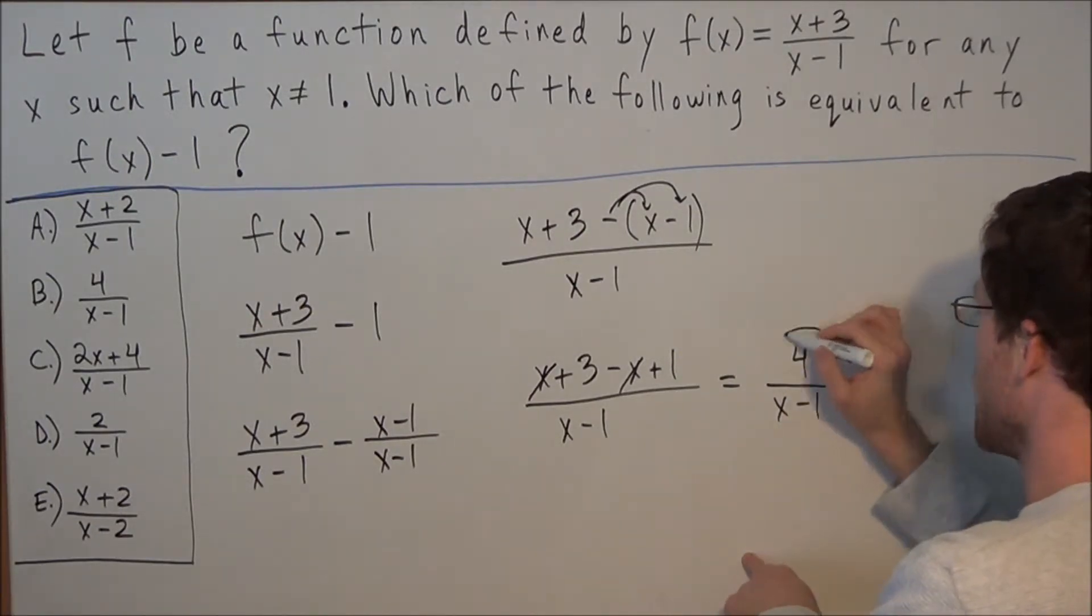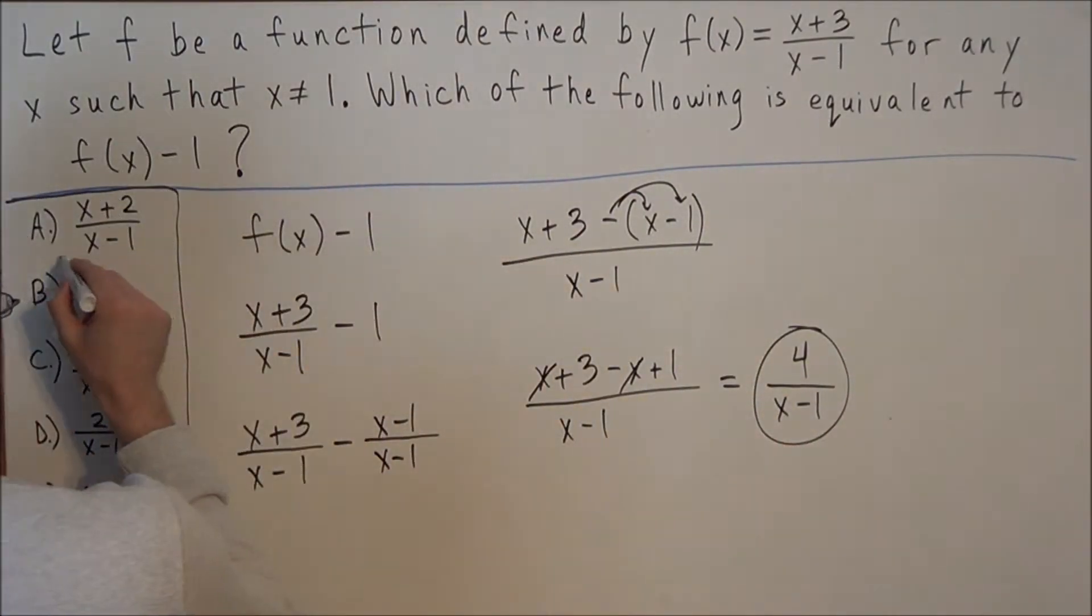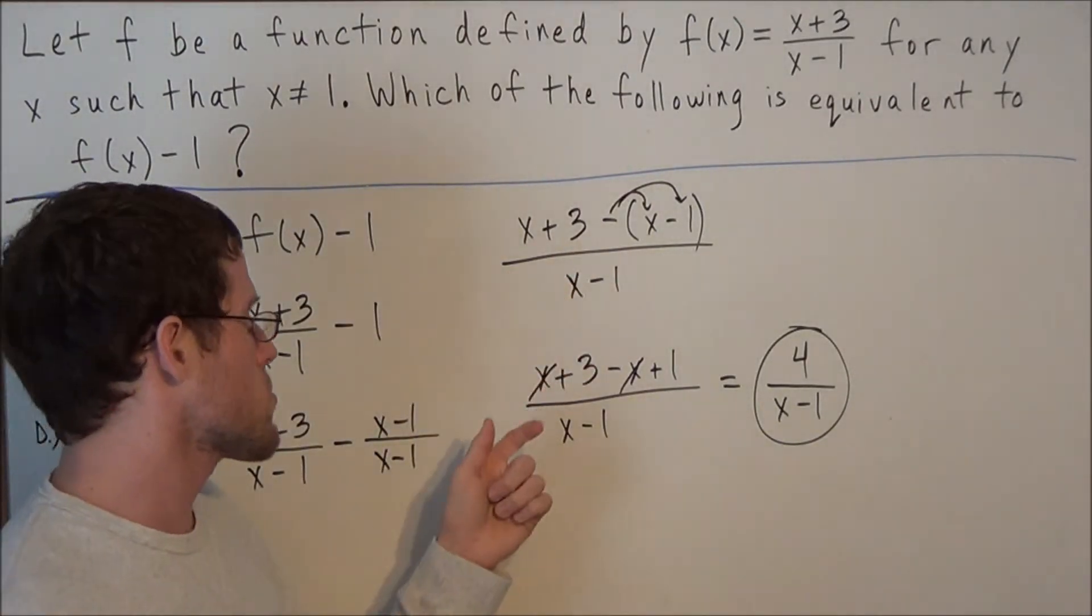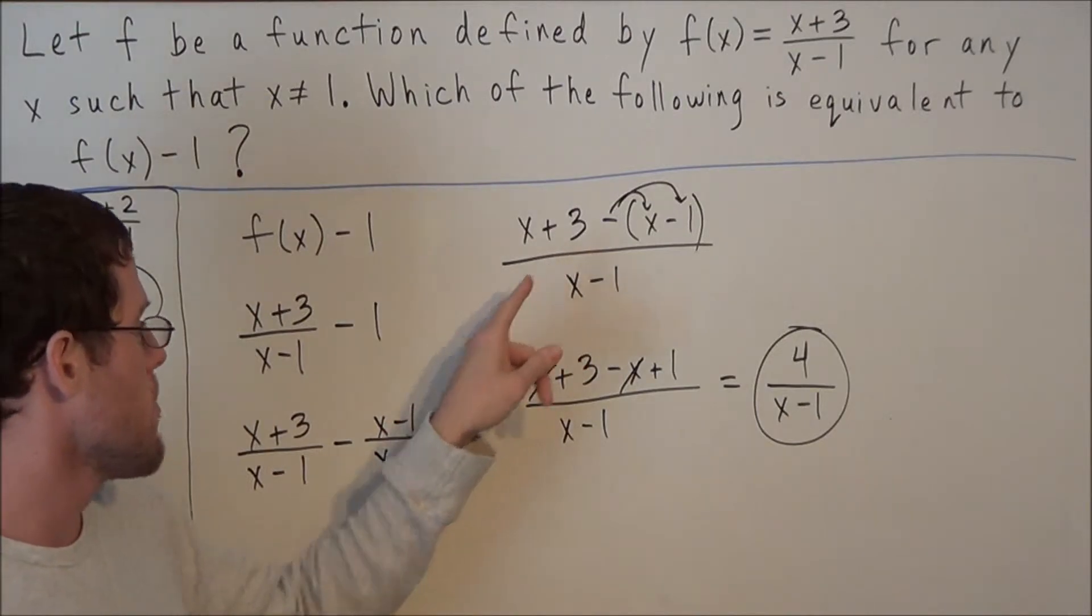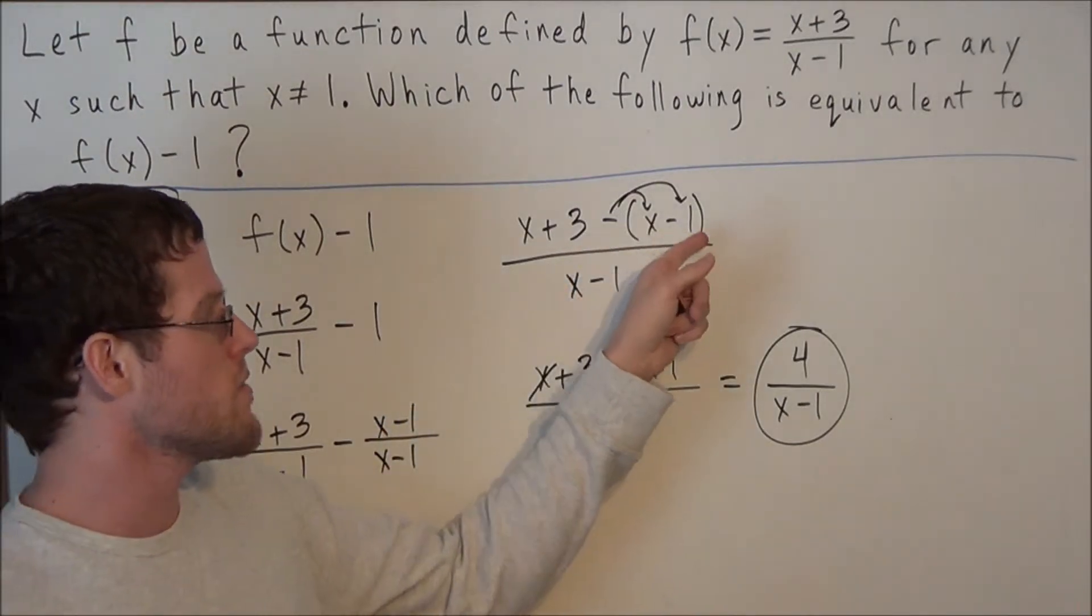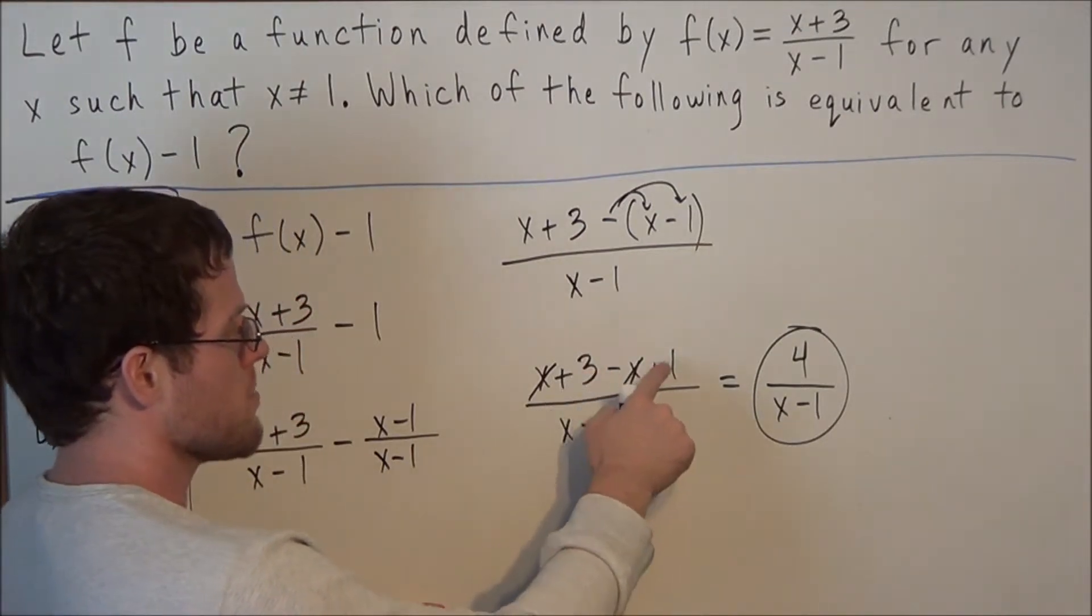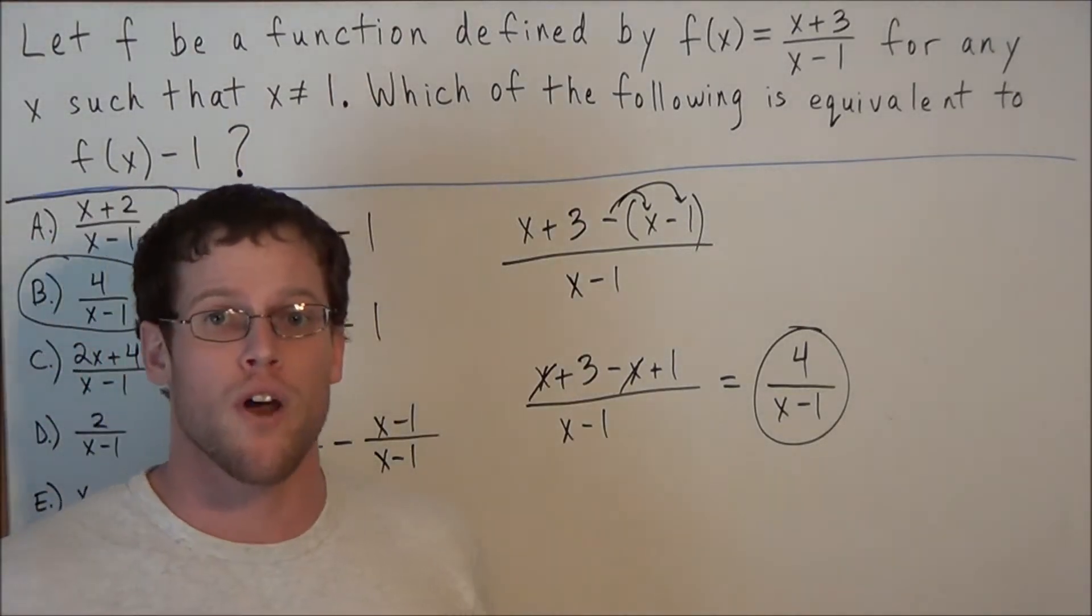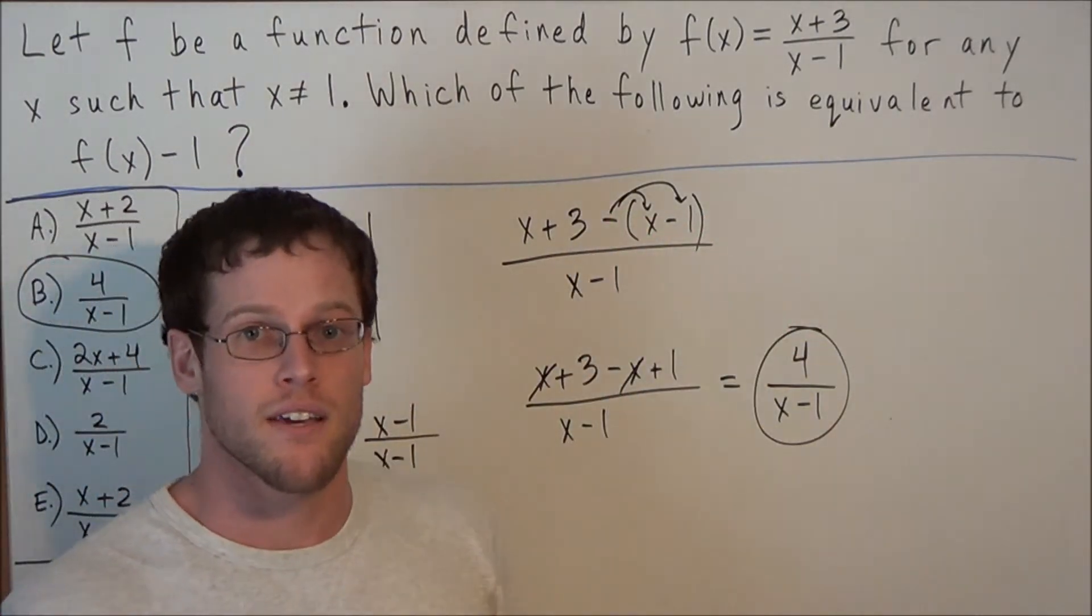Now the reason why I emphasize those parentheses is because a lot of students, when they mix this up, they'll do something like x plus 3 minus x, but they'll leave this as minus 1. So if this were a minus 1, then we would have 3 minus 1 is 2, and we would have 2 over x minus 1 instead. So this is why choice D is there as a trap to make sure that you understand this step of distributing that negative.